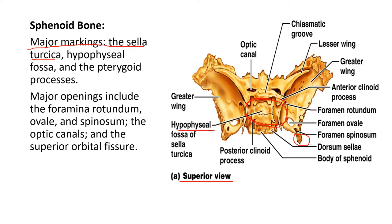The major markings include the sella turcica. In the center is the hypophysial fossa of the sella turcica — and what sits inside the hypophysial fossa is the hypophysial gland, otherwise known as the pituitary gland. You also have your optic canals going on an angle. You can stick a pipe cleaner through there to demonstrate their direction. On a test, I would put a stick in there with a flag and ask you to name the canal and the nerve — that's the optic canal for the optic nerve.